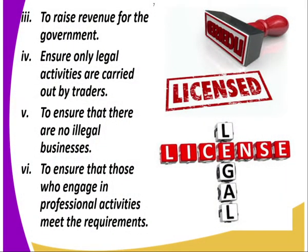Number three: to raise revenue for the government. The government is able to get revenue through licensing. Then, to ensure only legal activities are carried out — meaning those activities have been allowed to be carried out in that country. Number five: to ensure that there are no illegal businesses carried out. And to ensure that those who engage in professional activities meet the requirements.